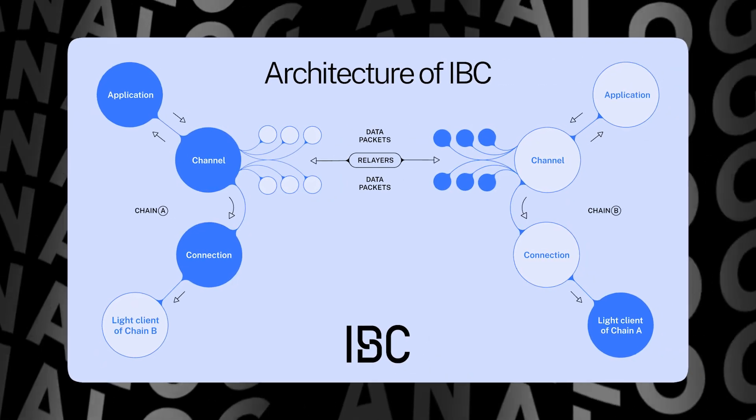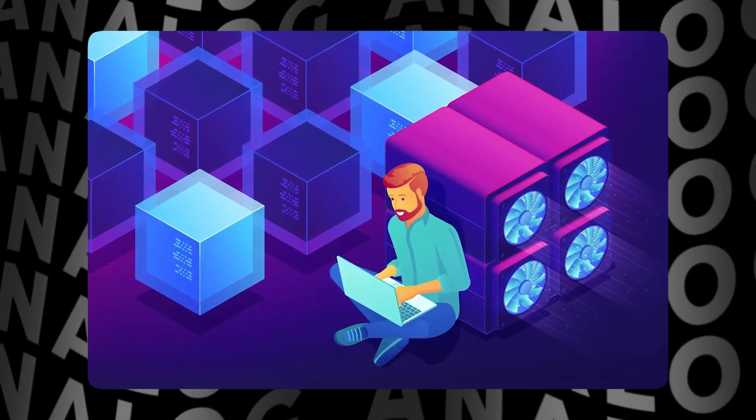High performance: blockchains built on Cosmos SDK and Comet BFT are capable of processing tens of thousands of transactions per second. High level of interoperability: the IBC protocol simplifies inter-blockchain communication by allowing different blockchains developed on different platforms to securely communicate with each other. High level of development flexibility: the platform supports the creation of applications in different programming languages, thanks to gRPC, allowing flexible interoperability between modules.